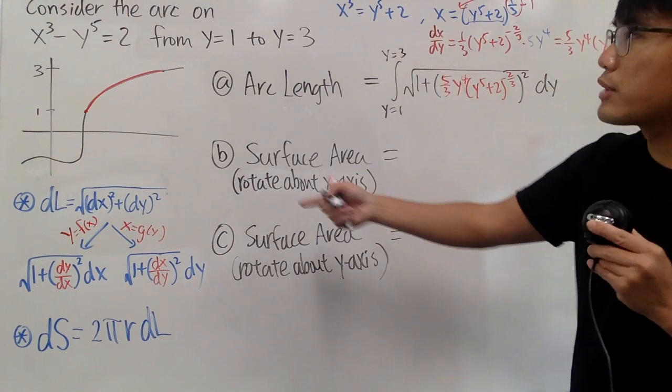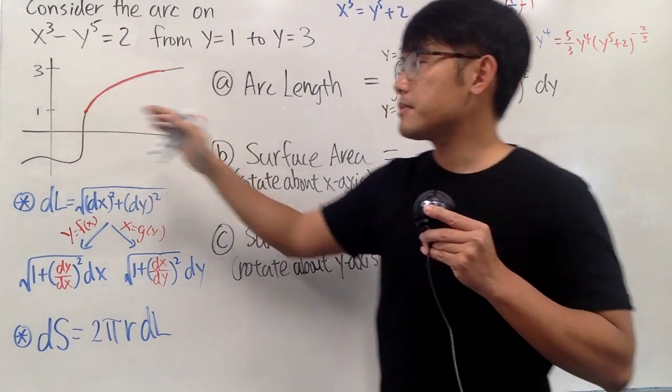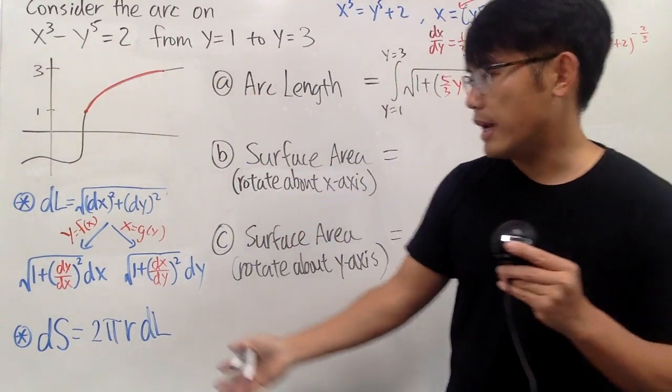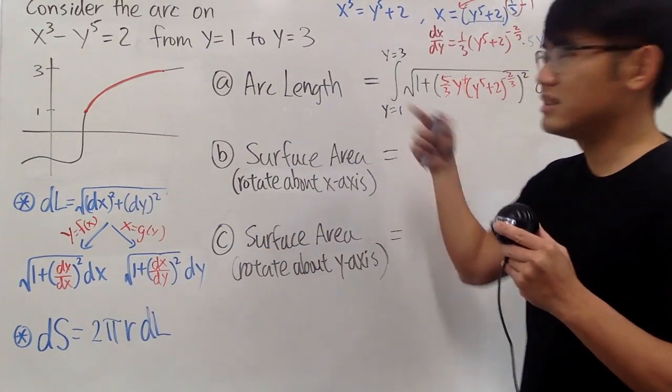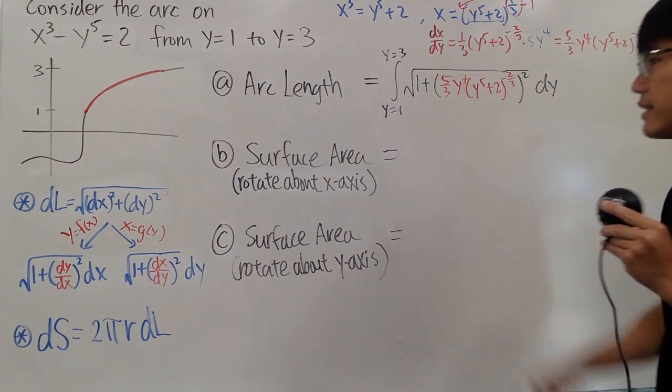And again, if you really want to, you can actually put in the y into the original equations, and you can get the x values, and you can actually use this one if you like. And then you can get the y by itself. It's just easier this way. It's slightly more convenient.